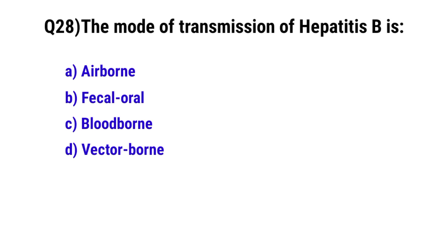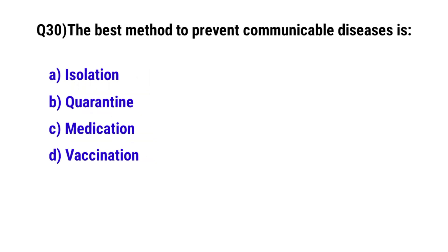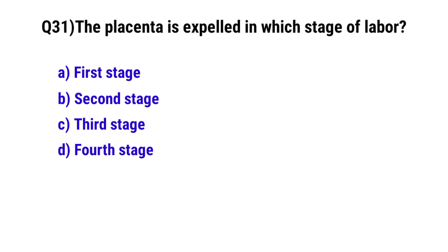Question number 28: The mode of transmission of hepatitis B is? The placenta is expelled in which stage of labor? The correct option is C: Third stage.